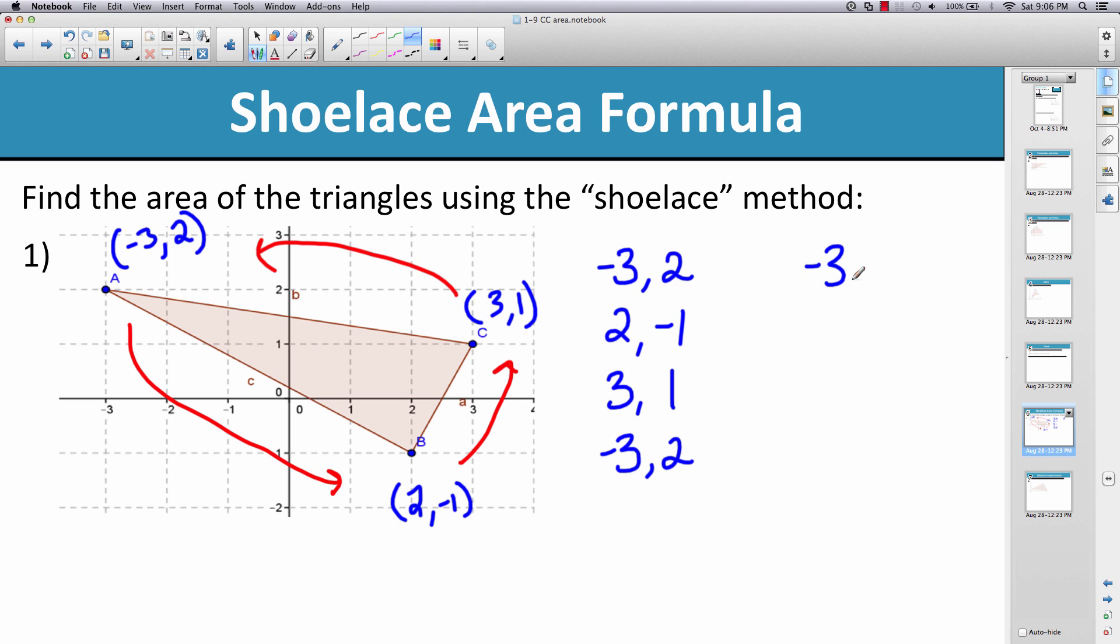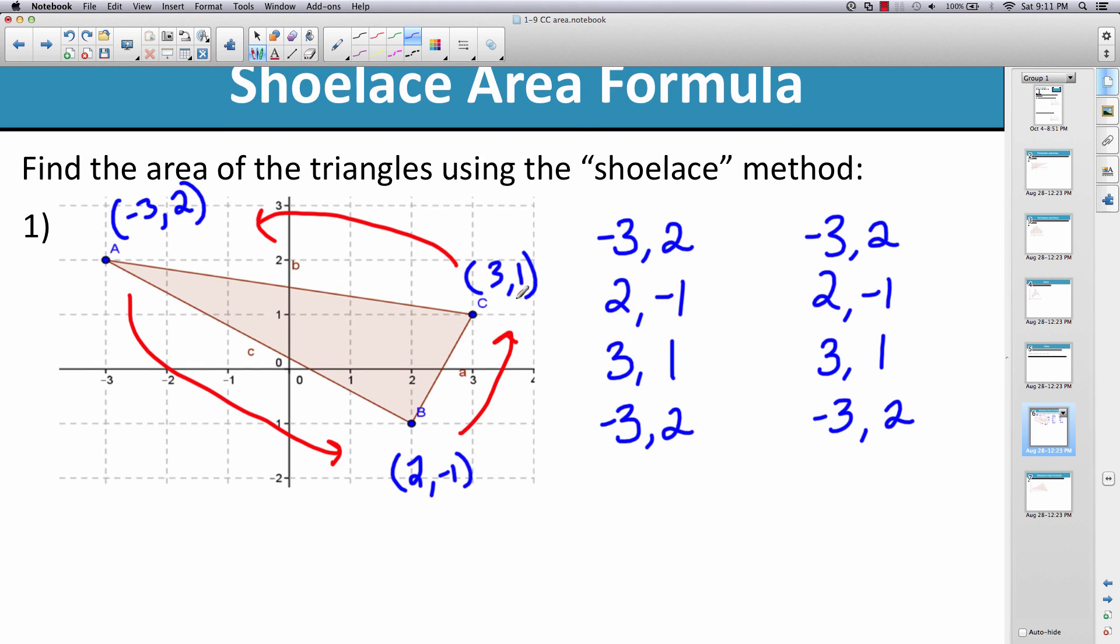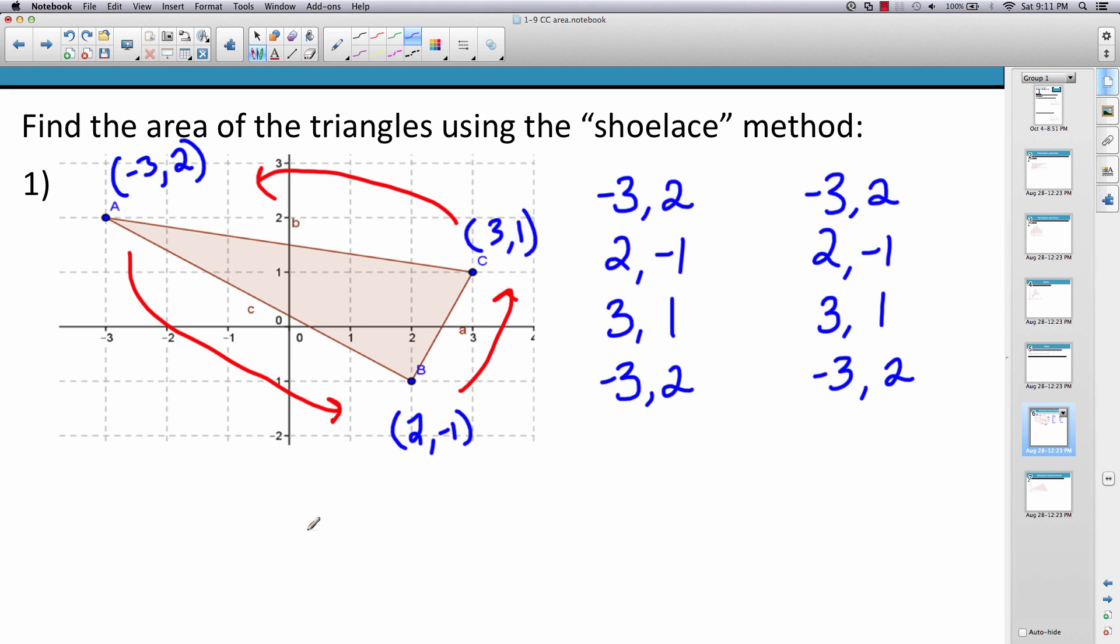And then we'll just rewrite it again: (-3, 2), (2, -1), (3, 1), and (-3, 2). So now to find the area using the shoelace method, the area is going to be one half of...